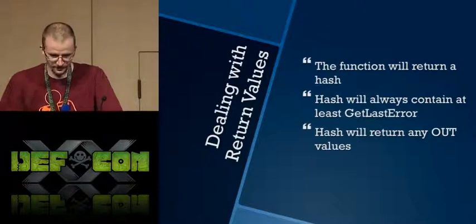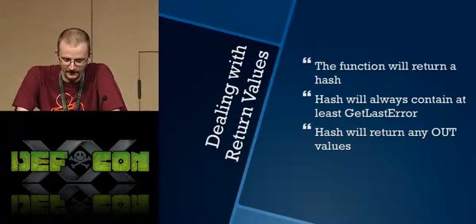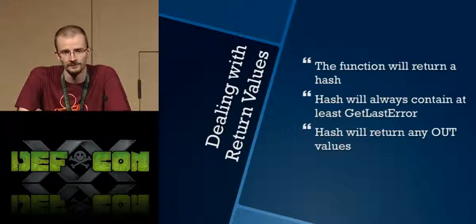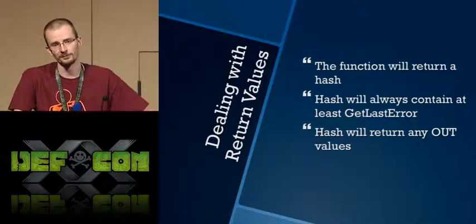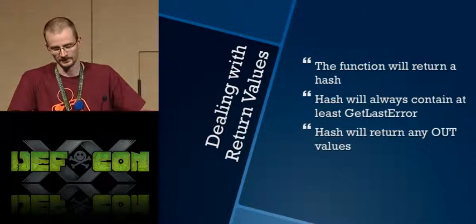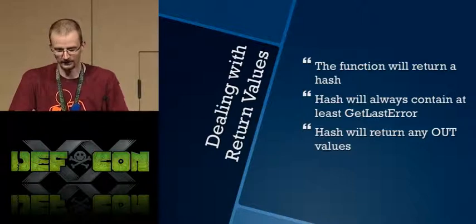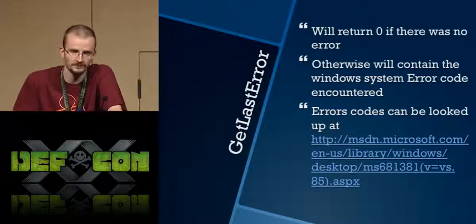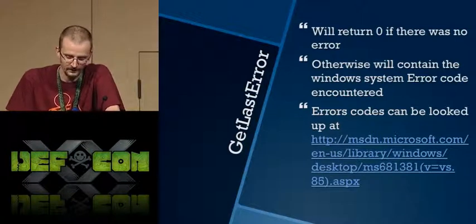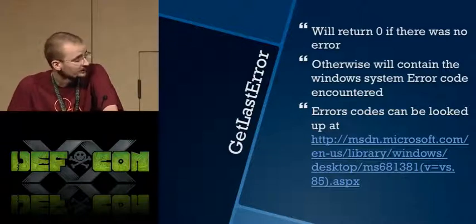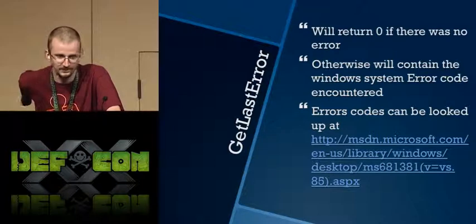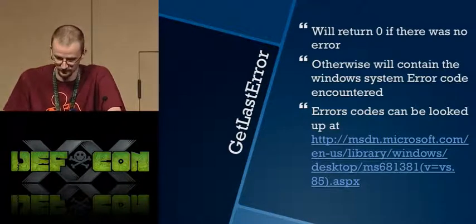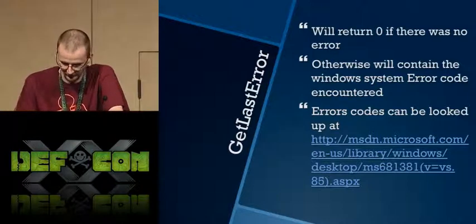When you make an actual function call, you're returned a hash. That hash will always contain at the very least the result of a GetLastError call. So Railgun makes the function call for you and then calls the Windows GetLastError function, which tells you any error code that occurred. The hash will also contain any out values from that function call. GetLastError returns zero if everything went fine; otherwise you get a system error code. I recommend having that MSDN error codes page bookmarked — it's super useful.